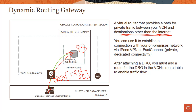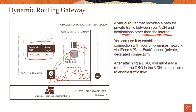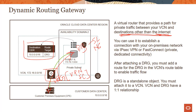After attaching a DRG, you must add a route for the DRG in the VCN's route table to enable traffic flow. If you don't add this route, packets get black-holed — they have no way to know to go to on-premises through this gateway. You can also have security lists or network security groups to secure your subnets and resources. DRG is a standalone object: you create it separately and then attach it to a VCN. VCN and DRG have a one-to-one relationship — one VCN can only have one DRG, and one DRG can be attached to only a single VCN at a time.